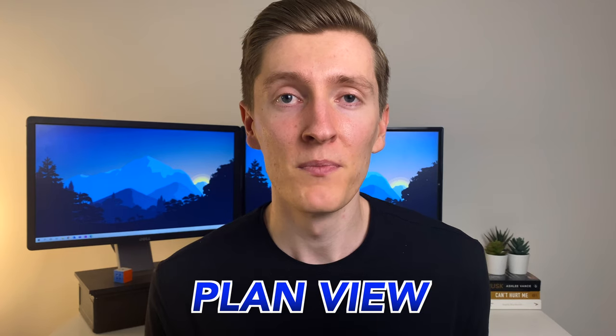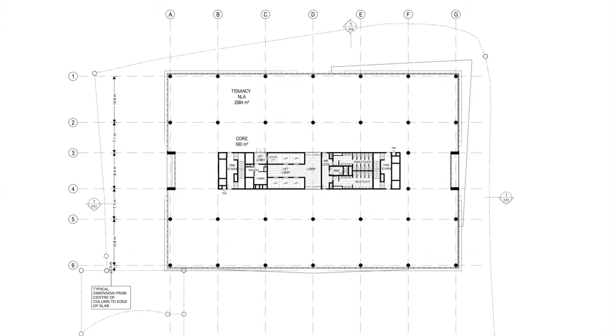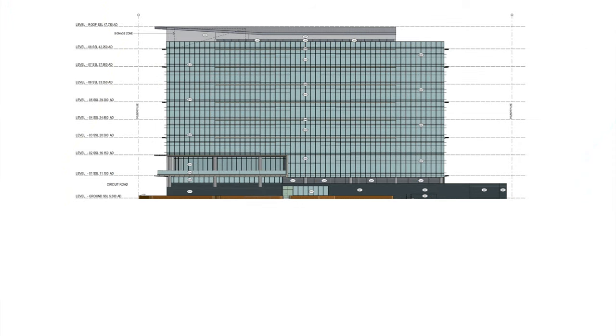The first thing I'm going to cover is a view that is provided on almost every single set of construction drawings, and that is a plan view. A plan view is basically what something would look like if you were looking down on it from above. One important thing to note about a plan view is that they're not only limited to looking down at the very top of a structure but can also be taken at different heights throughout the building.